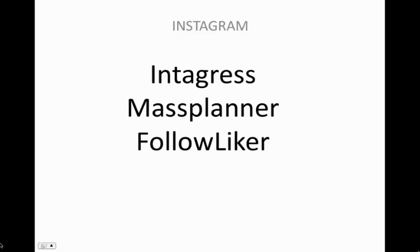The three tools that I like to use and would recommend for Instagram automation are Instagress, Mass Planner, and FollowLiker. There's a little bit of difference between these. Instagress is an online site where you can put your Instagram account on automation through the web, so it's automatically going.